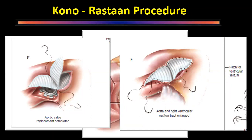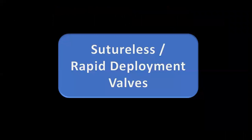These were the techniques for managing a small aortic root. The Nicks and Manouguian procedures will definitely be asked about in examinations, as they can be performed by surgeons with less expertise. Next are sutureless or rapid deployment valves — newly developed devices. The correct name is 'rapid deployment valves.'